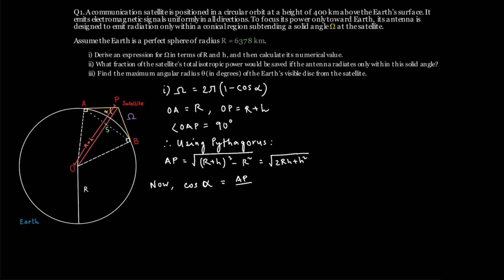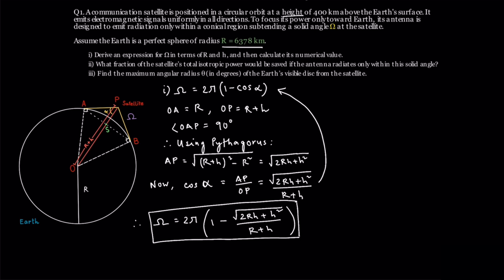Substituting values gives that AP is the square root of 2RH plus h squared. Now cos alpha is adjacent over hypotenuse and that's basically AP over OP. We plug in the values and simplify. Now we can substitute that back into the solid angle expression. We'd finally get omega equals 2 pi times 1 minus square root of 2RH plus h squared over r plus h. And with r equals 6378 kilometers and h equals 400 kilometers, this evaluates numerically to about 4.155 steridians. I encourage you to put in the values and check that for yourself.